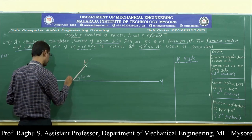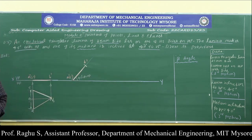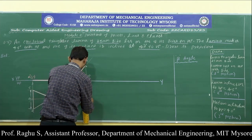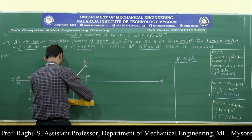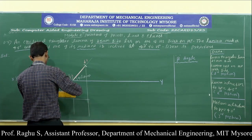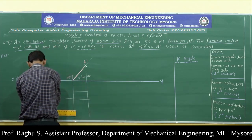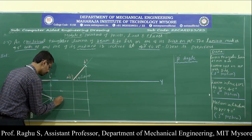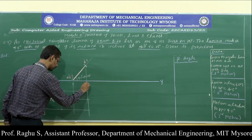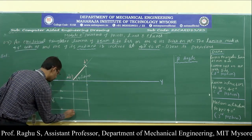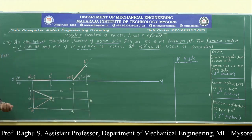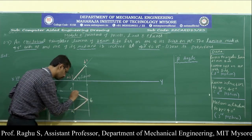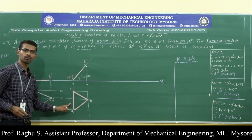To get the second position top view, draw vertical downward projections and horizontal projections. Indicate the arrows. Do the naming A, B, and C, and connect all points. I have got the second position top view.